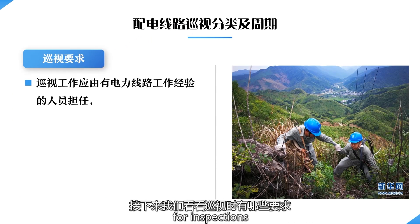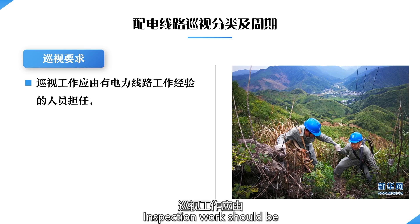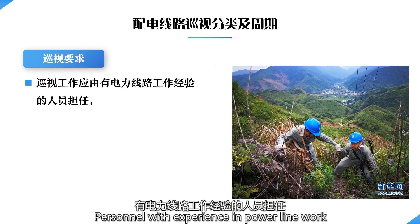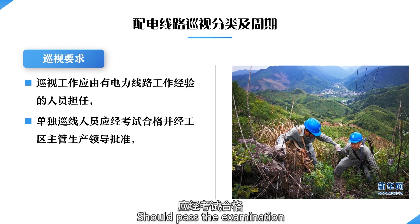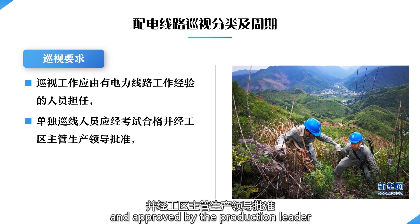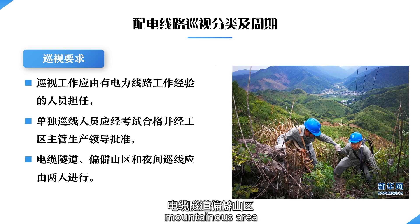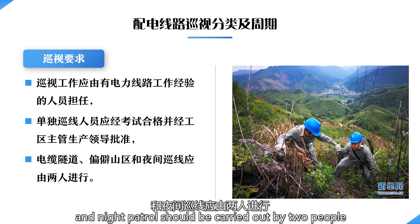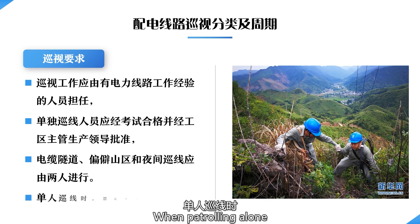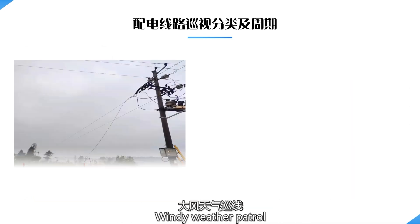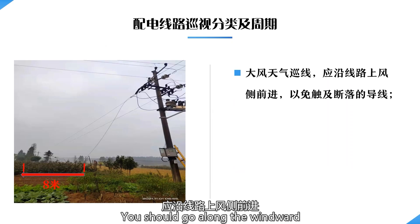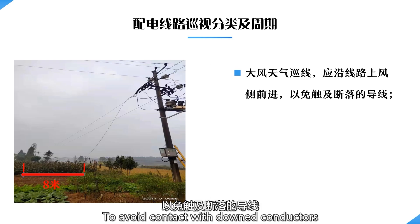Inspection work should be performed by personnel with experience in power line work. Individual inspectors should pass the examination and be approved by the production leader in charge. Cable tunnel, remote mountainous area, and night patrol should be carried out by two people. When patrolling alone, climbing poles and towers is prohibited. During windy weather patrol, you should go along the windward side of the line to avoid contact with downed conductors.